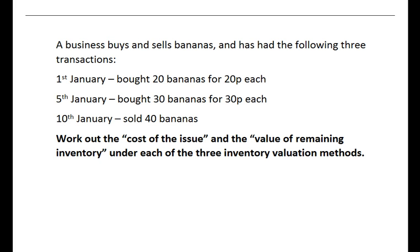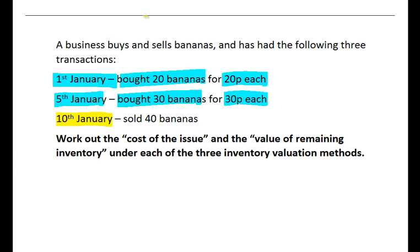Now we've got our example here. On the 1st of January the business bought 20 bananas, so they received 20 bananas into the storeroom at 20 pence each. 5th of January, a second purchase of 30 bananas, this time at 30 pence each, so in total they've got 50 bananas. On the 10th of January they sell 40 of them.